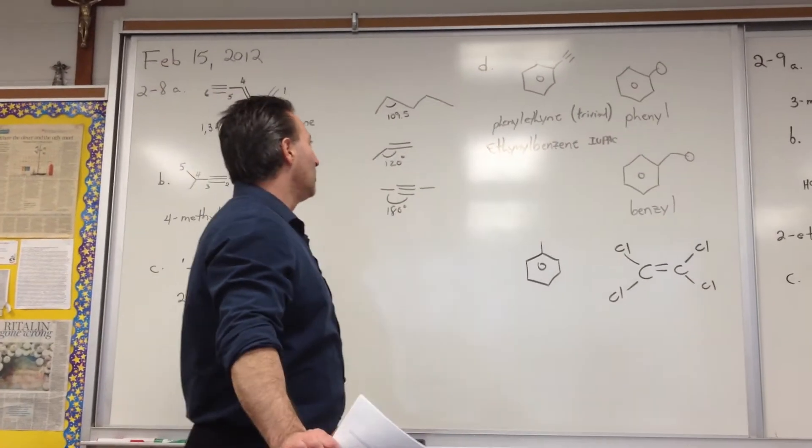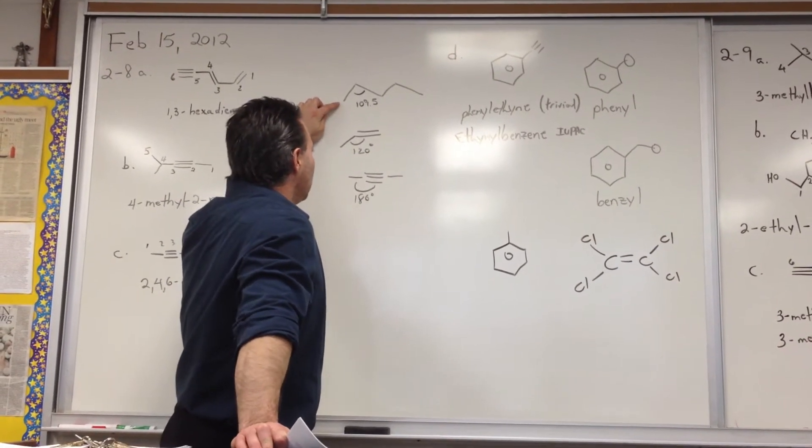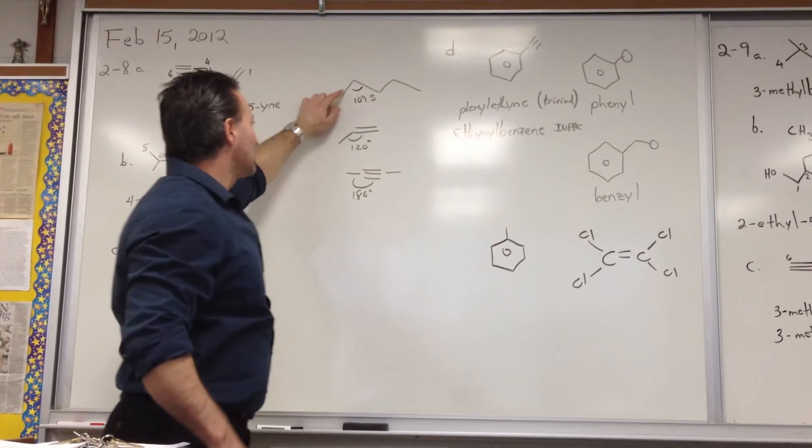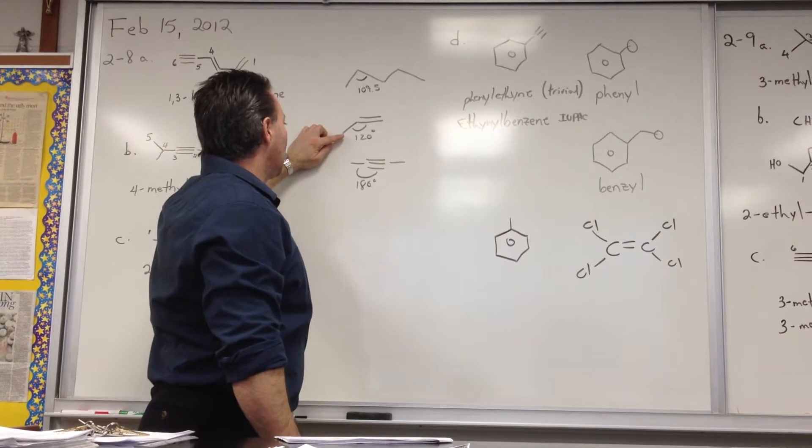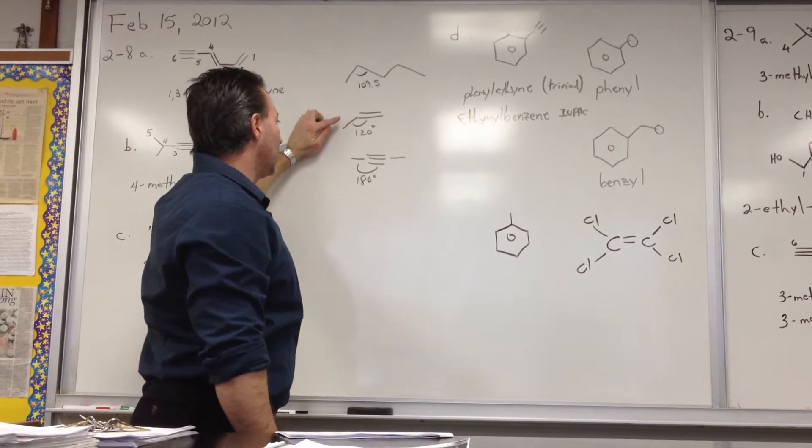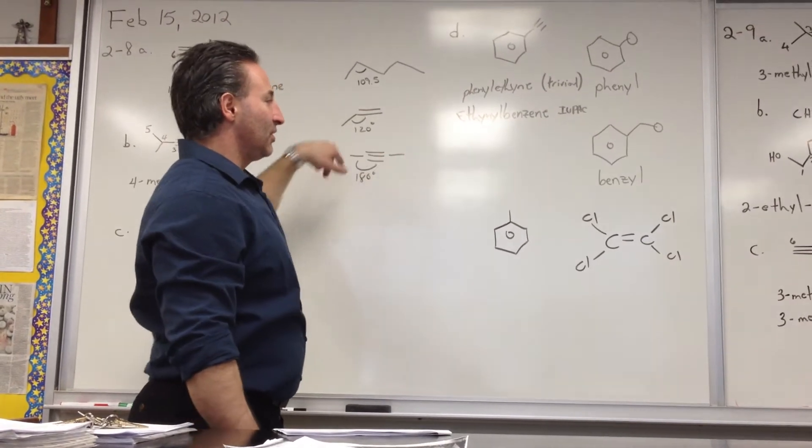Just an aside before we continue, when you draw molecules, recall that a single bonded carbon has a 109.5 degree bond angle. A double bonded carbon has a 120 degree angle, and whenever you have a triple bonded carbon, it's going to be straight, it's 180 degrees.